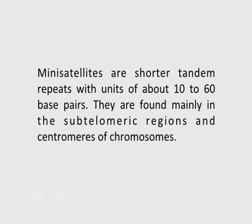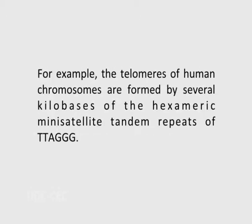Mini-satellites are found mainly in the sub-telomeric regions and centromeres of chromosomes. For example, the telomeres of human chromosomes are formed by several kilobases of the hexameric mini-satellite tandem repeats of TTAZGG. The mini-satellites are often highly polymorphic with regard to the number of repeat units and are commonly used as genetic markers.